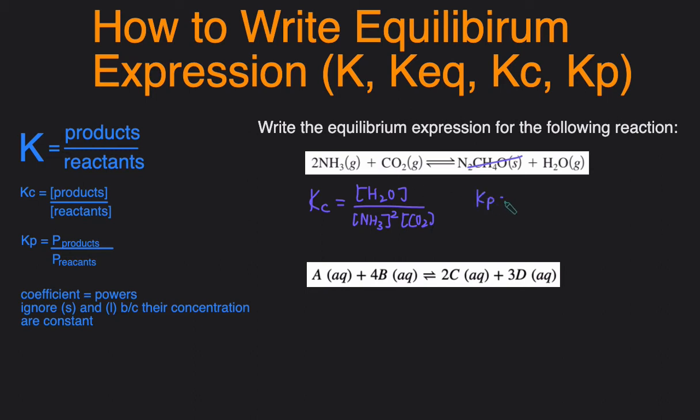For Kp, we'll just be using pressure. So it would be pressure of the products H2O divided by pressure of the reactants NH3 squared because the coefficient 2 multiplied by the pressure of CO2.